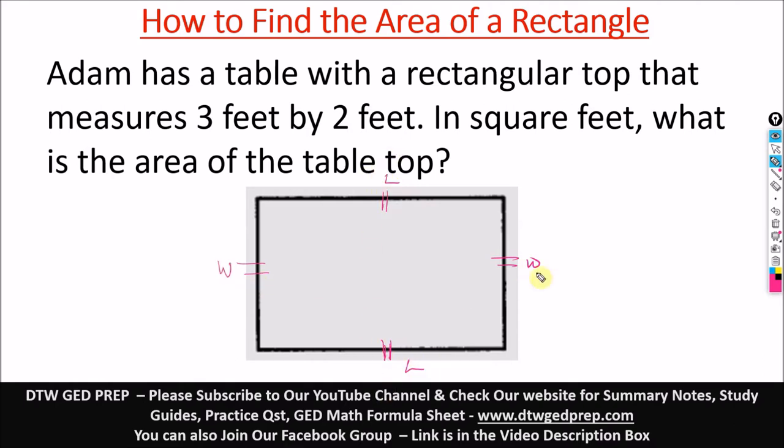These sides are equal and these opposite sides are equal. What's the formula for the area of a rectangle? A is equal to L times W, length times your width.